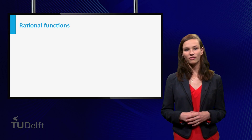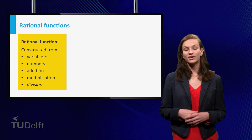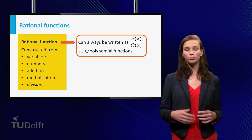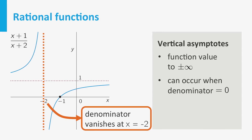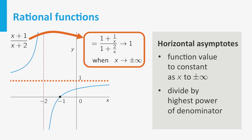The second class of functions that we considered are rational functions. These are precisely the functions that can be constructed from a variable and a set of numbers, using addition, multiplication and division. Any rational function can be written as a quotient of two polynomials. The graph of a rational function may have asymptotes, straight lines that are approached by the graph. Vertical asymptotes, where the function grows to plus or minus infinity, can occur at x values for which the denominator vanishes. Be careful though — if the numerator vanishes as well, an asymptote may be absent. Horizontal asymptotes occur precisely if a function tends to a constant for x much larger or much smaller than 0. The common technique to find such asymptotes is to divide numerator and denominator by the highest power of x occurring in the denominator, so you can see clearly what happens as x grows large.